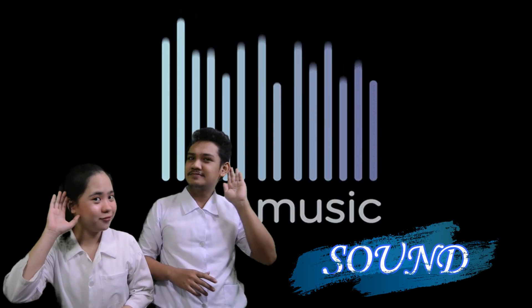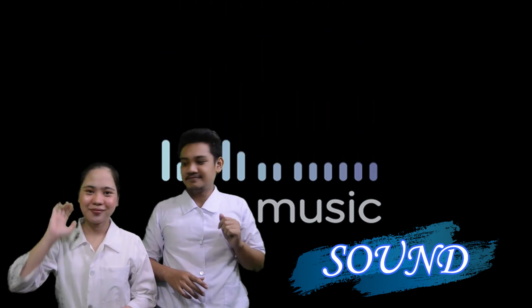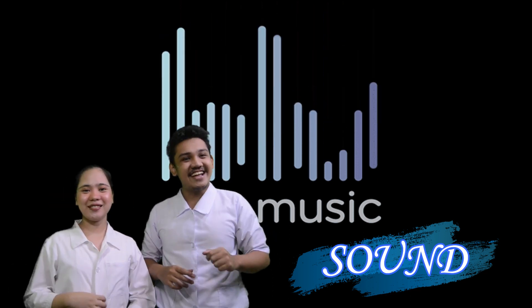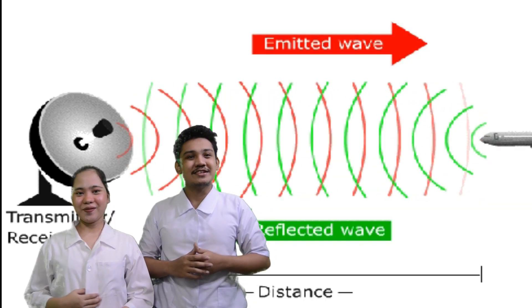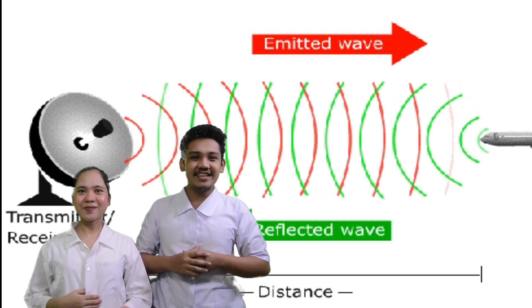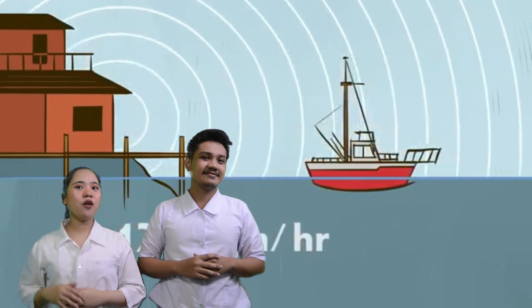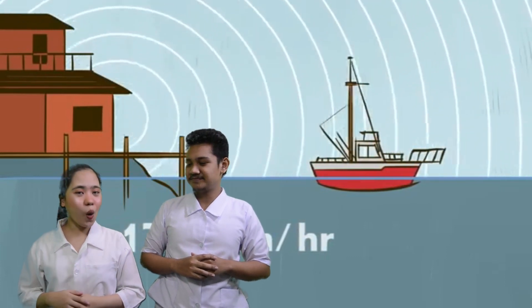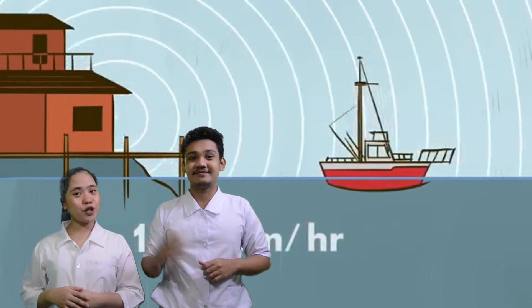Hi! Do you have any idea about sound? That's nice! Sound is produced by vibrating matter. Sound reaches our ears by sound waves through a transmitting medium like air. The speed of sound varies according to the medium through which it travels.